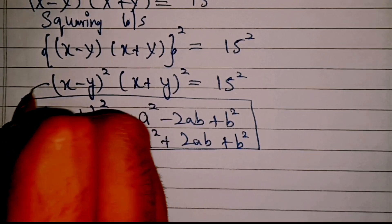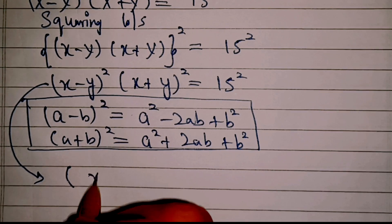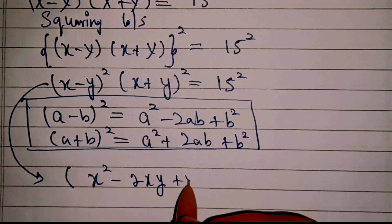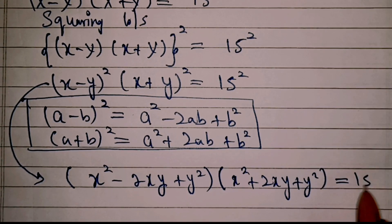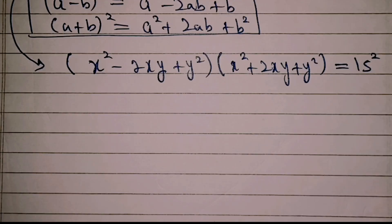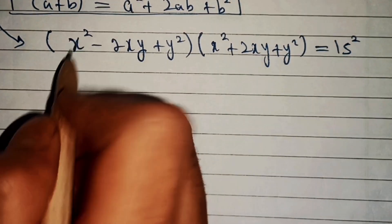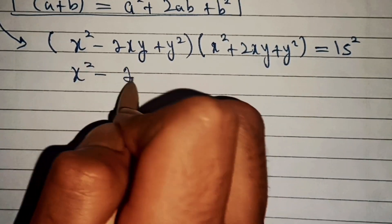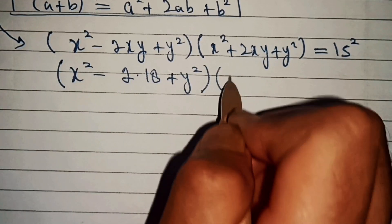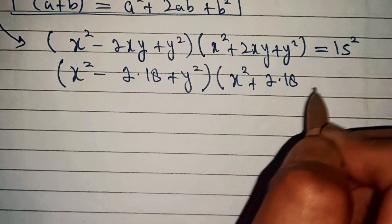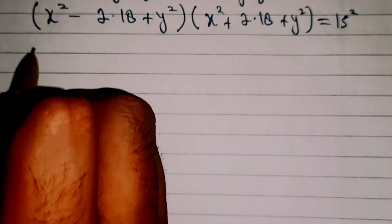Now we'll apply these two identities. So this becomes (x squared minus 2xy plus y squared) into (x squared plus 2xy plus y squared) equal to 15 squared. From the second equation we know xy equals 18, so substituting: (x squared minus 2 times 18 plus y squared) into (x squared plus 2 times 18 plus y squared) equal to 225.